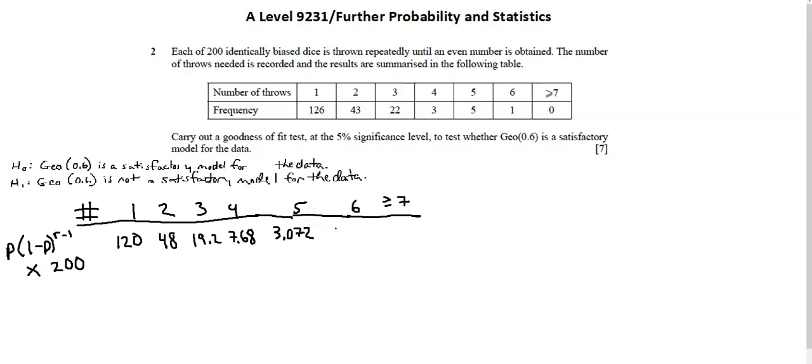r equals 6, 1.2288. Now the expectation I'm calculating for 7 plus I'm going to put into a box.